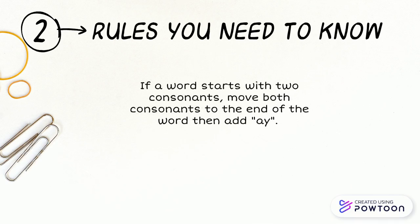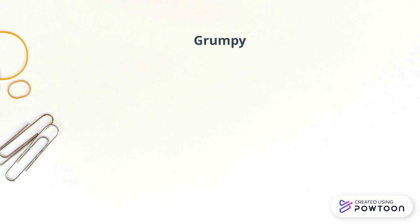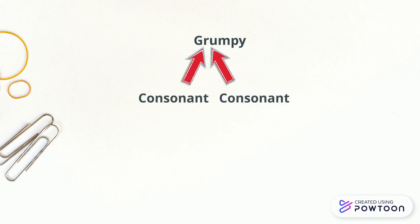If a word starts with two consonants, move both consonants to the end of the word, then add a Y. For example, grumpy. G and R are both consonants, so we need to move the G and R to the back of the word, then we need to add a Y. And this is our result.